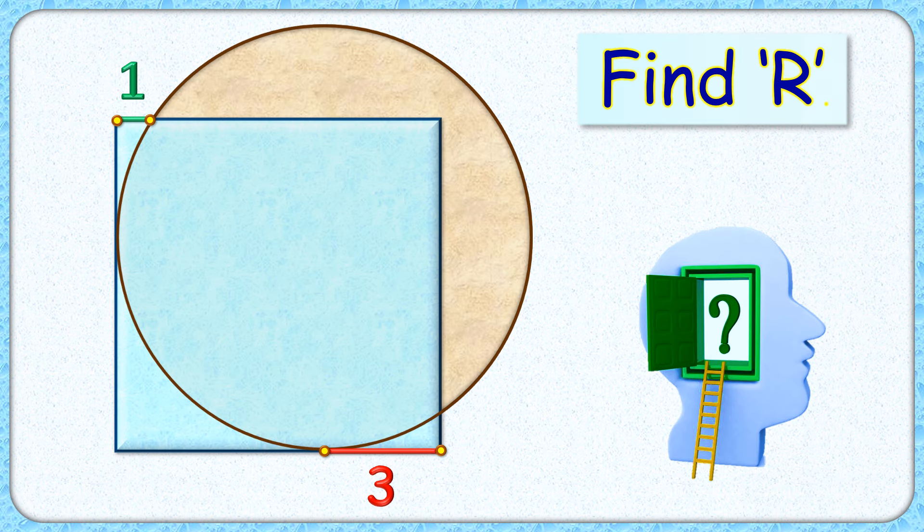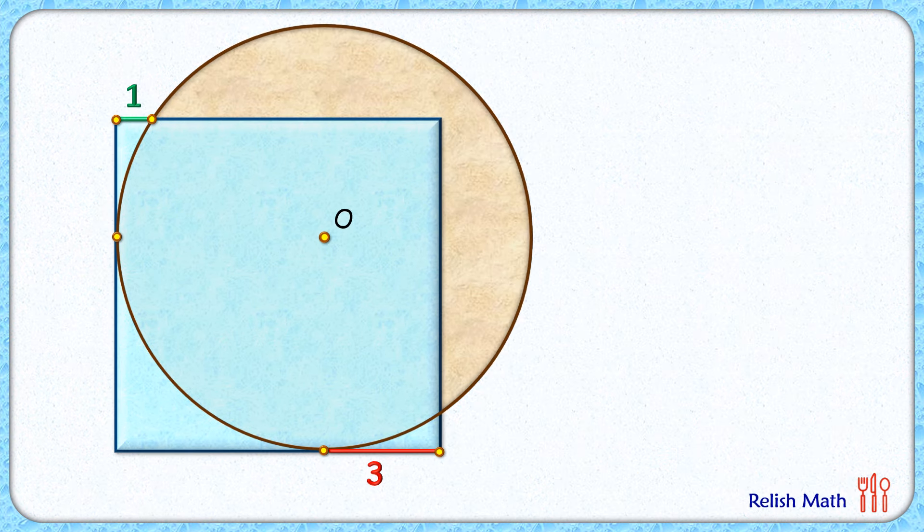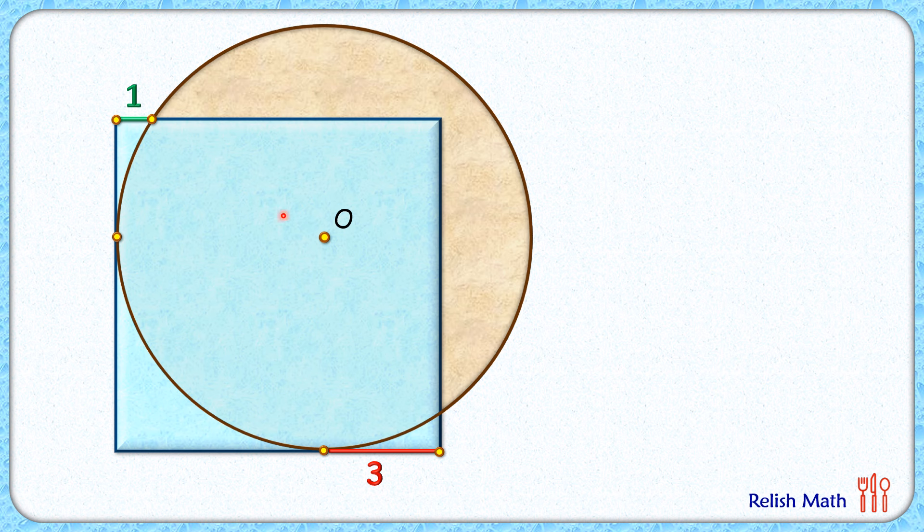Let's check this simple and elegant solution. Let's start by assuming the center of circle is point O and the radius of the circle is R centimeters.